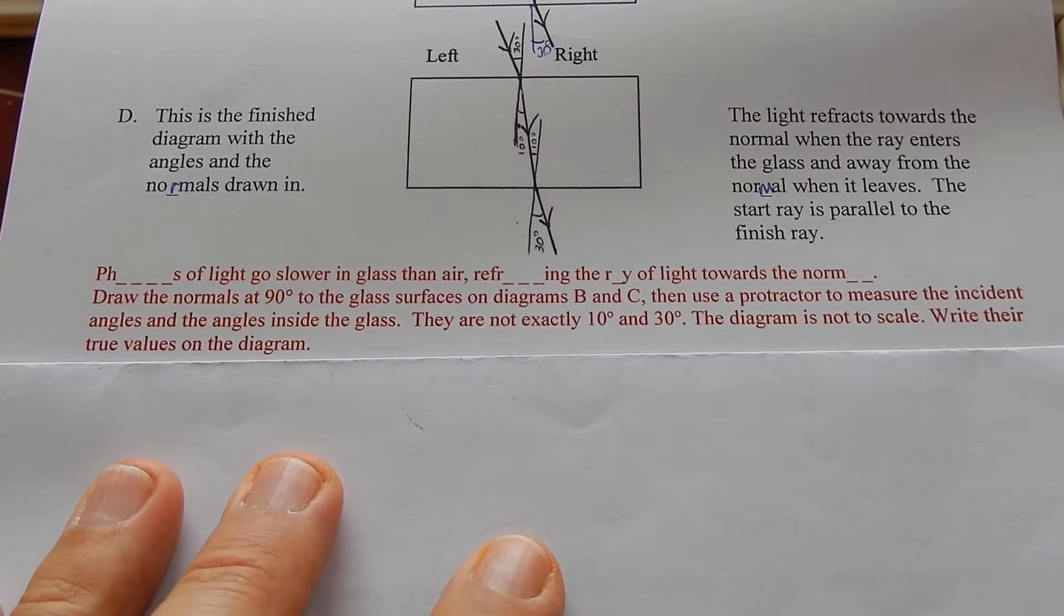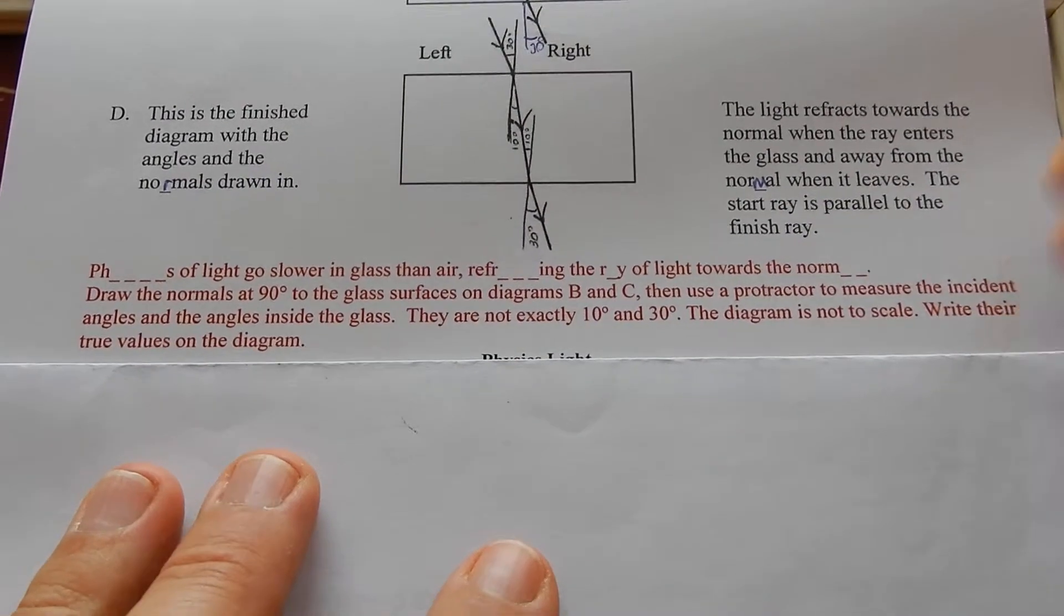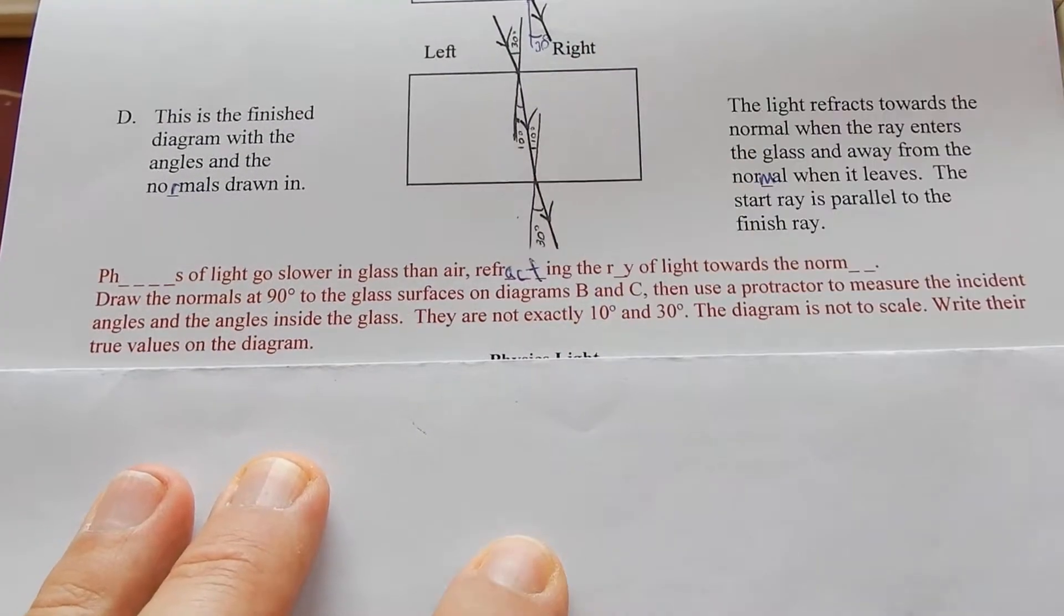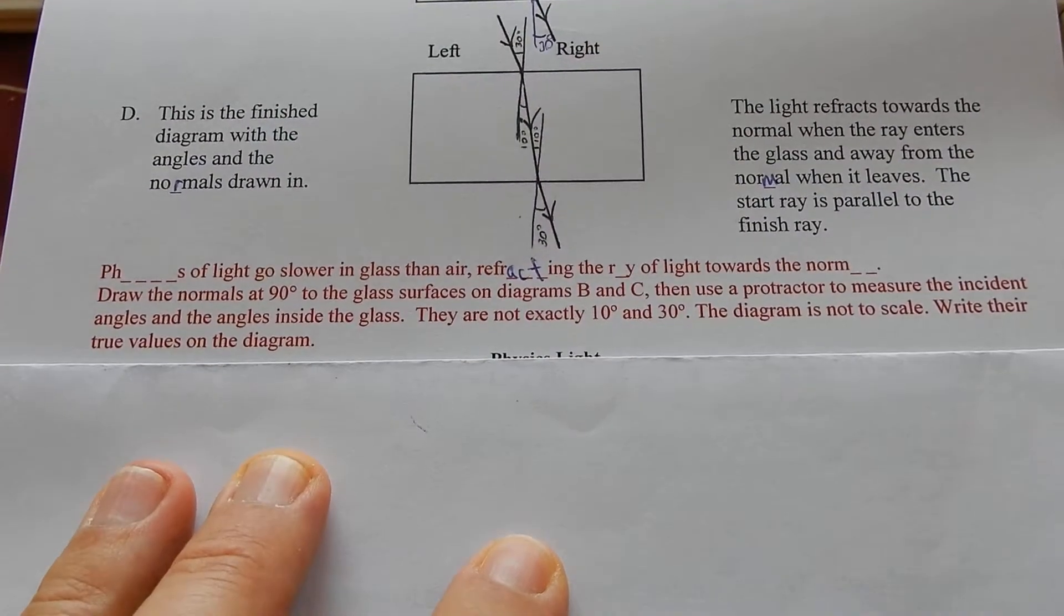Photons of light go slower in glass than air. Refracting the rays of light towards the normal.